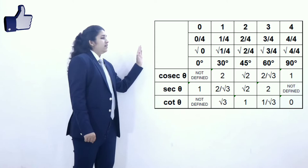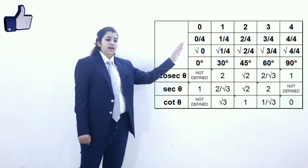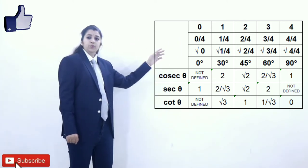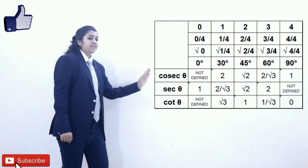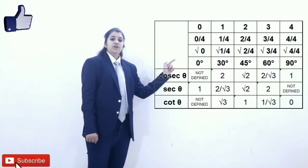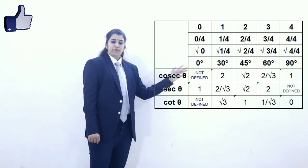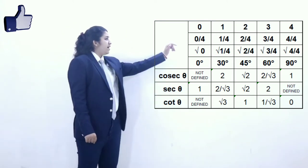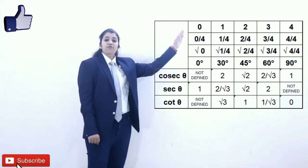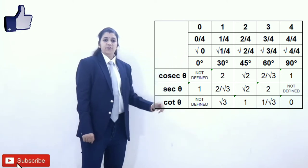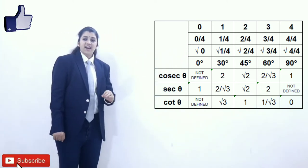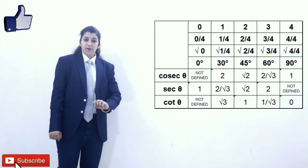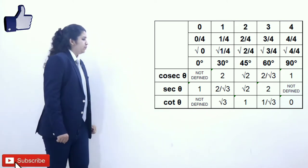For sin 30 degrees, sin 30 degrees is actually 1 upon 2, so cosec 30 degrees is the reciprocal of 1 upon 2, which is 2. Moving on further, we have sin 45 degrees, which is 1 upon root 2, so cosec 45 degrees is the reciprocal of 1 upon root 2, which is root 2.